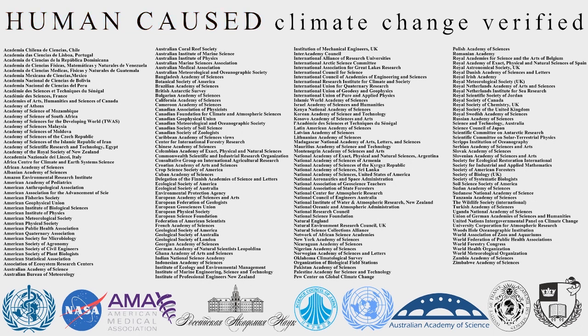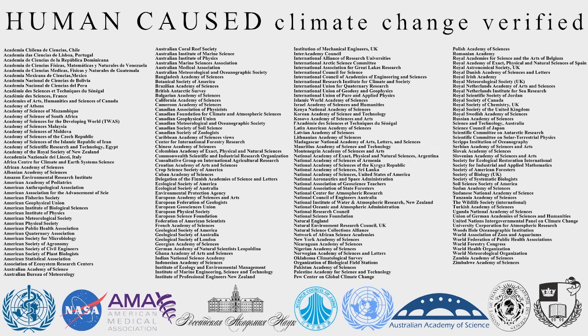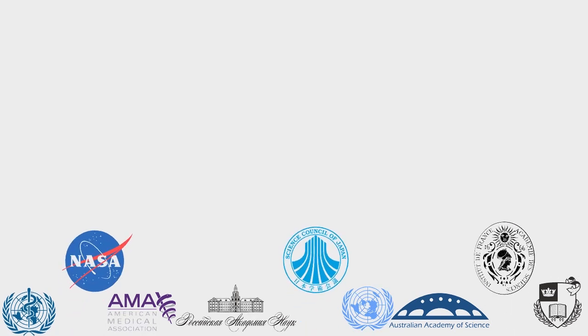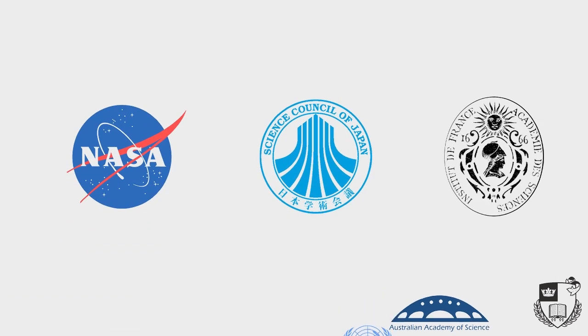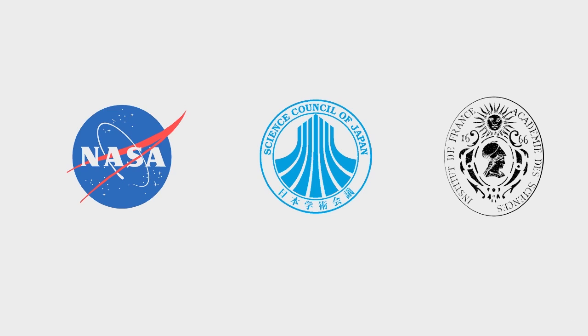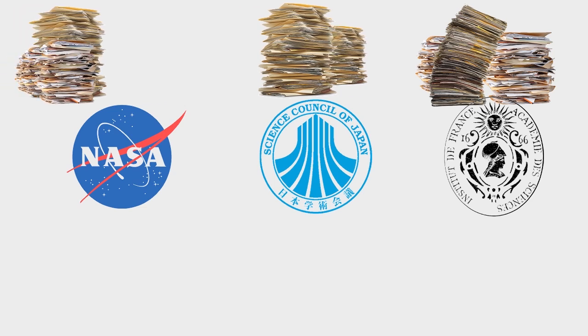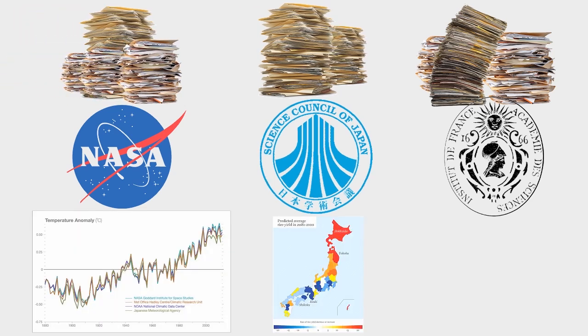In some ways it's unfortunate that there's not any kind of metric for scientific consensus to show the public on a sliding scale just how overwhelmingly supported certain theories are. Consensus is important. It represents careful judgment from the most respected scientific institutions from all over the world who review every scrap of data available to them and independently arrive at the same conclusion.